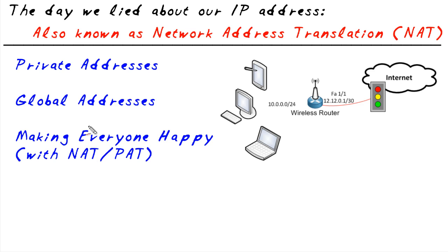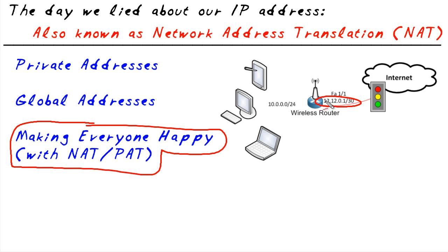That's how we can make everybody happy. We take a single global address given to a customer for the outside interface of the router and hide all our other internal addresses using network address translation and port address translation, so the internet sees only the one global address. The router is responsible for making sure untranslations on the way back for return traffic reach their rightful destinations. I've had a lot of fun sharing why we need NAT and how it works. I hope this has been informative and I'd like to thank you for viewing.